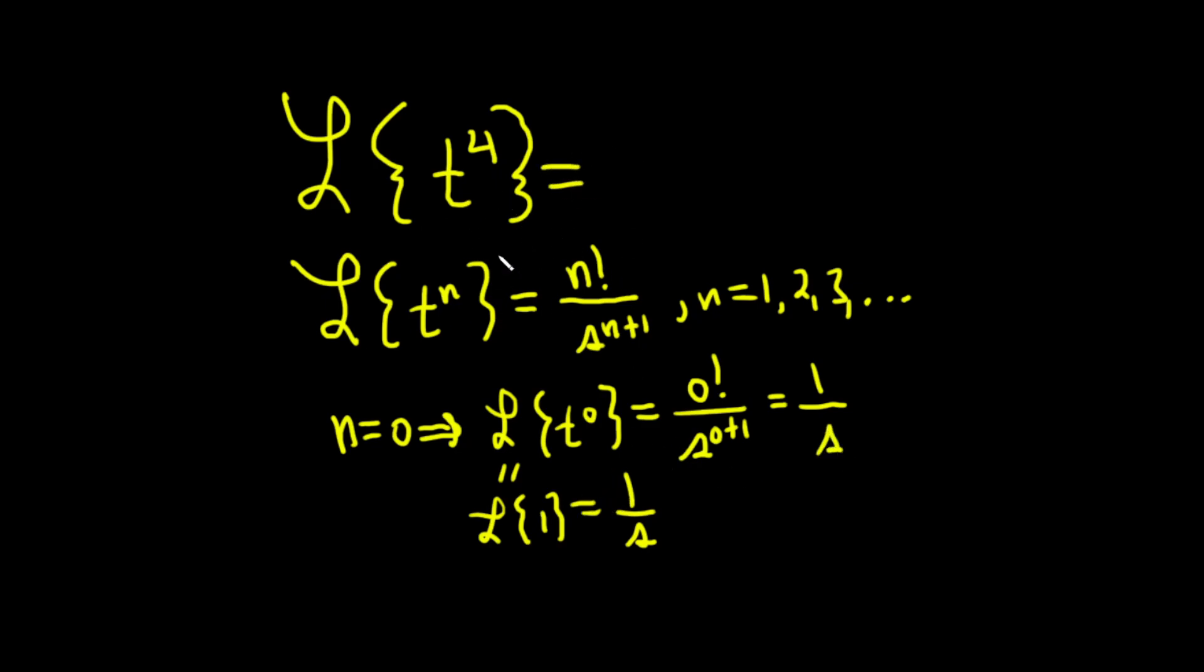So if we apply the formula here, we end up with 4 factorial, because our n is 4, over s to the 4 plus 1, which is 5. 4 factorial is 24, and then we have on the bottom s to the 5th.